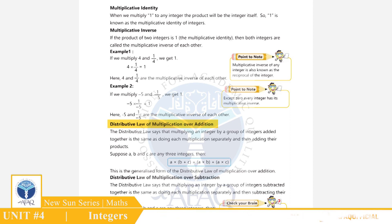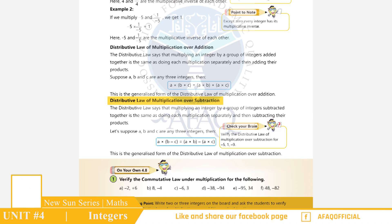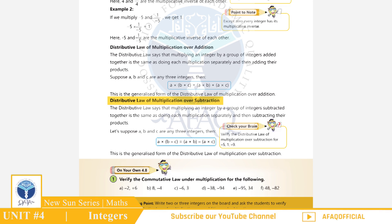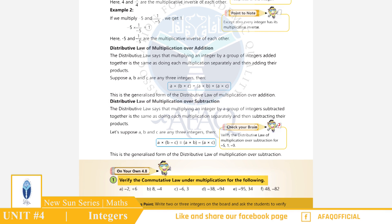Distributive Law of Multiplication over Addition: अगर एक integer को दो integers के sum के साथ multiply करें, तो ये बराबर है उस integer को दोनों integers के साथ अलग-अलग multiply करके sum लेने के, यعنی A × (B + C) = A×B + A×C। Distributive Law over Subtraction: A × (B − C) = A×B − A×C। इन laws को समझने के लिए exercise से सवाल हल करते हैं।